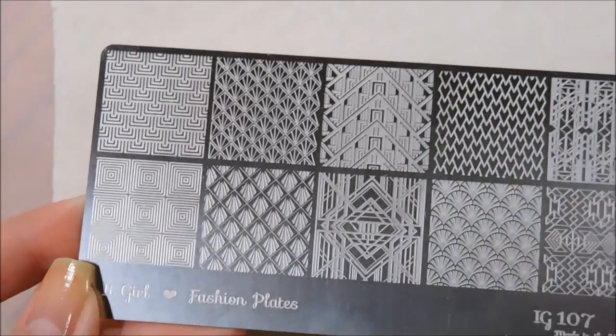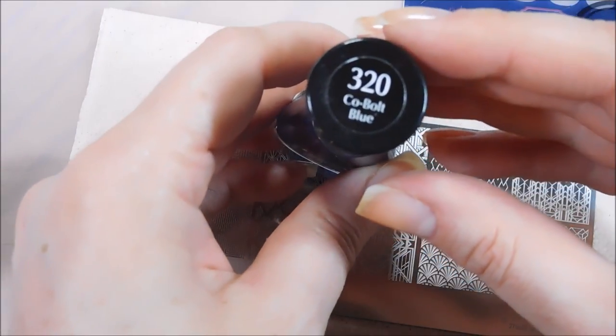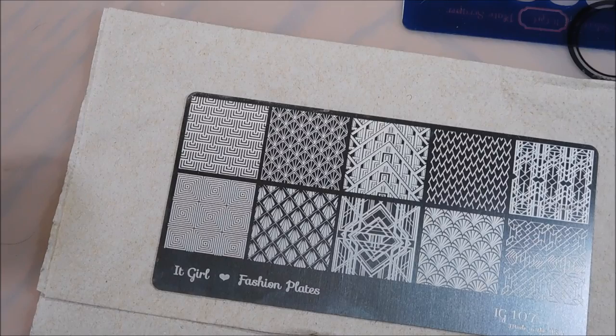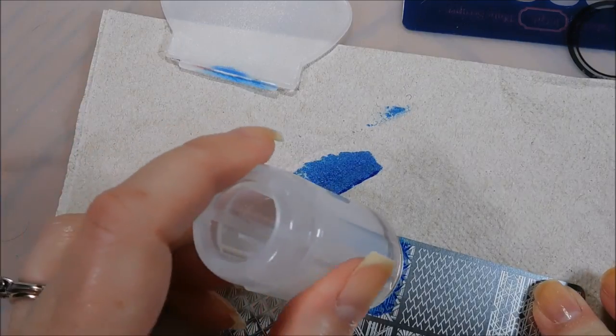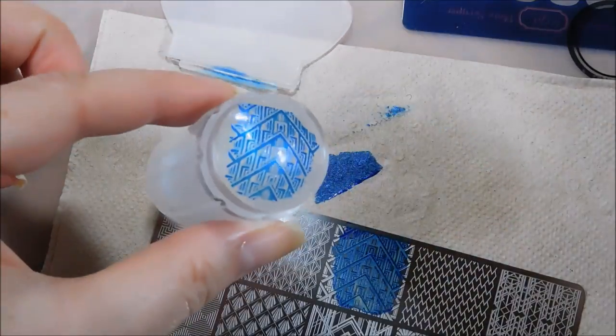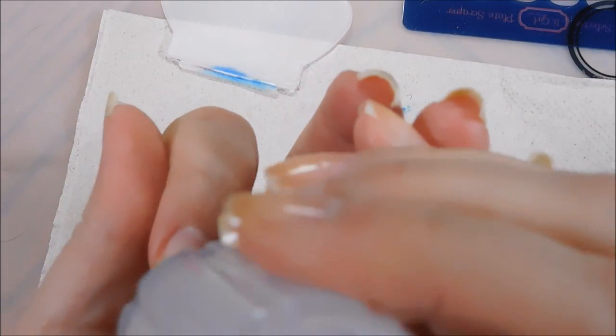For this test I'm going to use Sally Hansen Insta-Dry in cobalt blue. I think blue is such an art deco-y kind of color. Beautiful image transfer and I'm going to show you on a nail because usually I show it directly on a piece of paper, but sometimes it's nice to see how it transfers directly onto the nail.